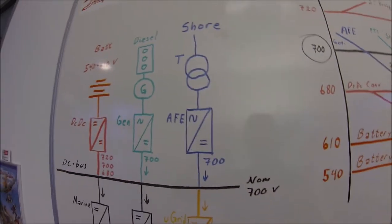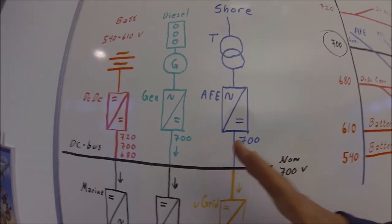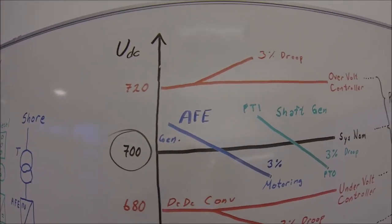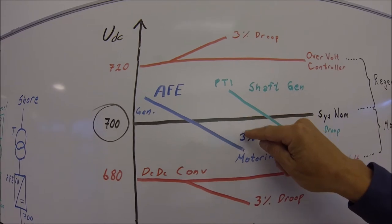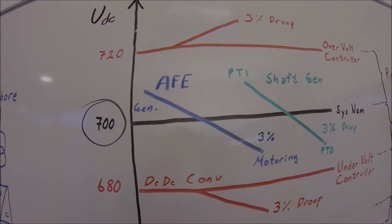The traditional active front end usually works around a nominal voltage and have a load drooping on the voltage. It's seen like here. Selected 700 volt, it will droop off 3% of its voltage as a function of the nominal current.